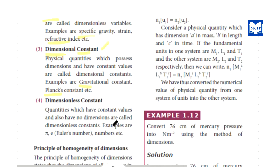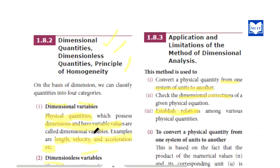The fourth one is dimensionless constant. Quantities which have constant values and have no dimension are called dimensionless constants. Examples are pi and e. These have a constant value but no dimension.